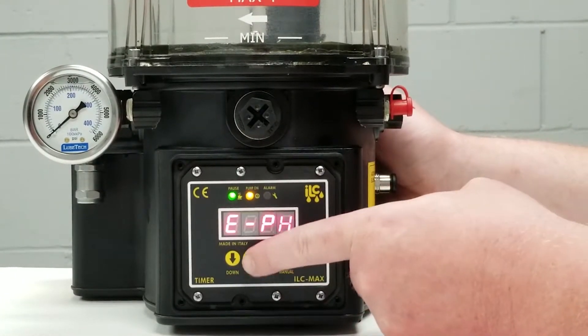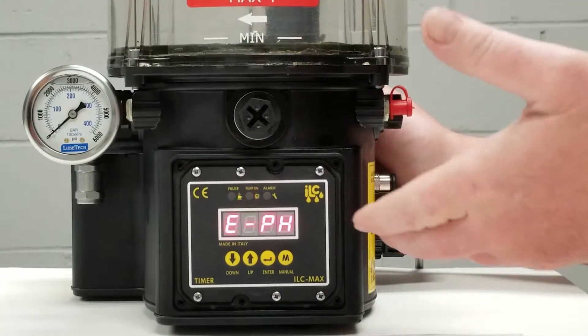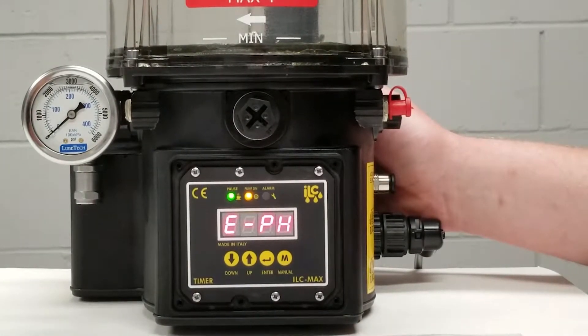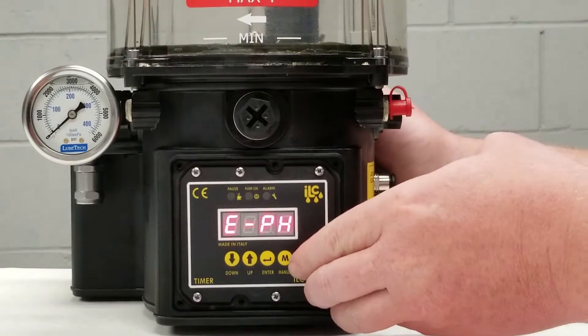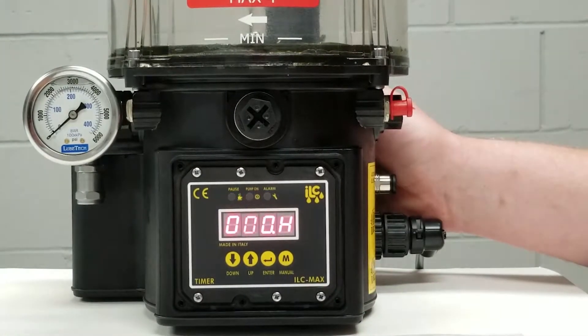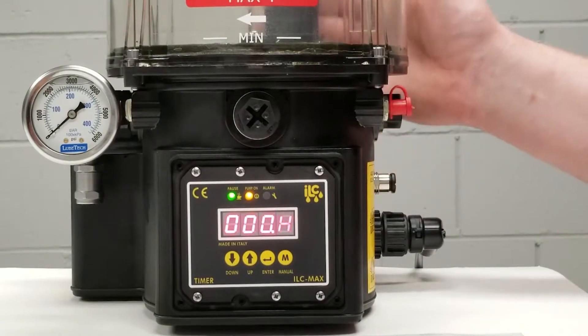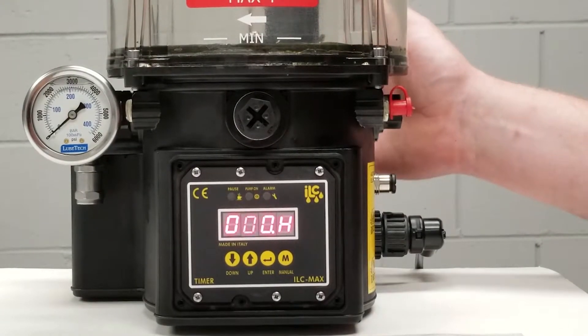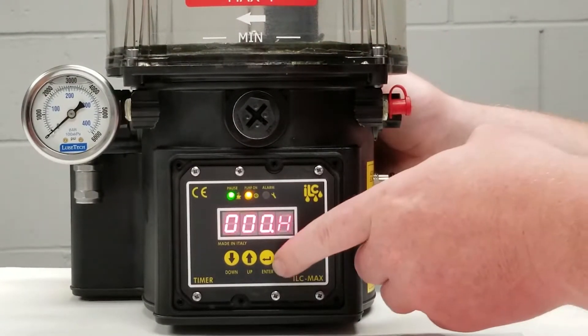Again I will press the up button and this would be my pause time and hours if we so chose to program it that way. This particular setup we have chosen no hours so this pump is only in delay for eight minutes with no hour setting. We'll leave this at zero.